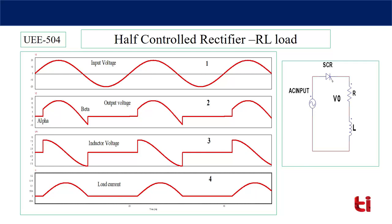If you look at the average output voltage here, it will reduce. In the case of resistance, the average output voltage was from alpha to pi; here the average output voltage goes from alpha to beta. As the negative portion is present, the output voltage will reduce. So two interesting things here: inductor voltage is positive as well as negative, and the conduction period of the thyristor is more than pi — up to beta.